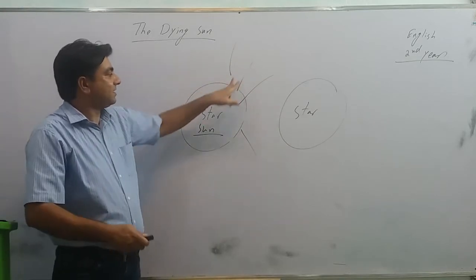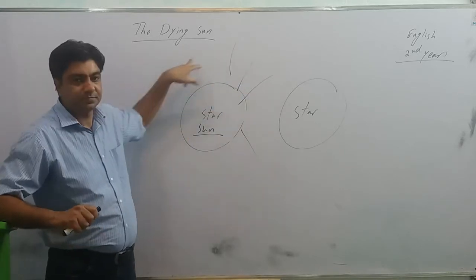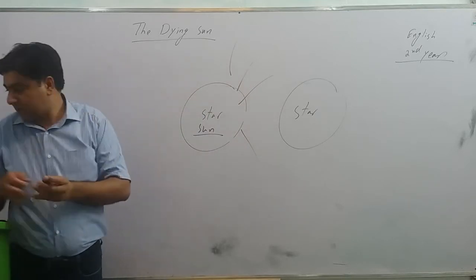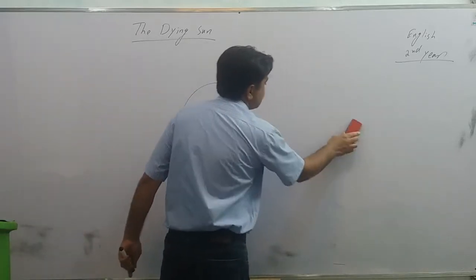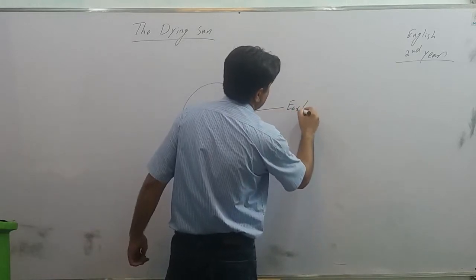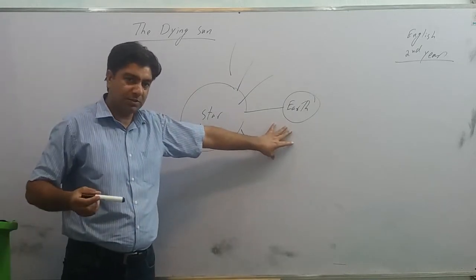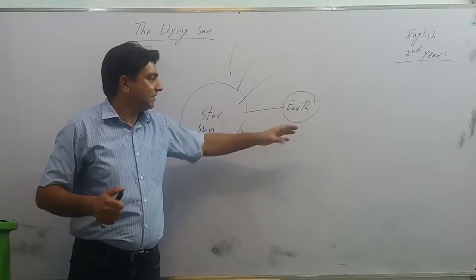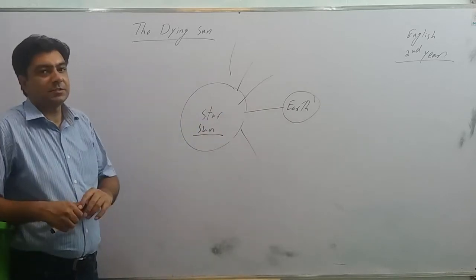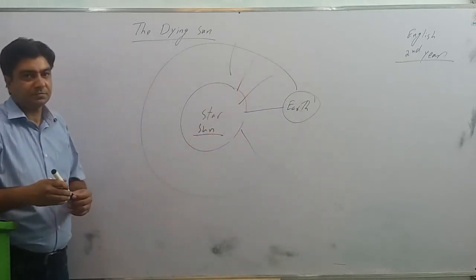It broke into pieces and it scattered in the space. But these pieces, they did not say goodbye to their parent star, they started revolving around it at specific distances. Out of those pieces, one piece happened to be planet earth. Initially these pieces were very warm, very hot, but with the passage of time they cooled down. And one of those pieces was this planet earth. It also started revolving around this sun.